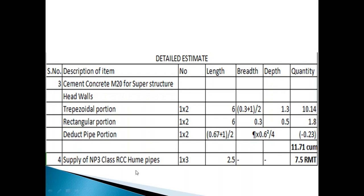Next, supply of NP3 class RCC home pipes. Each pipe length is 2.5 meters, total 7.5 RMT.